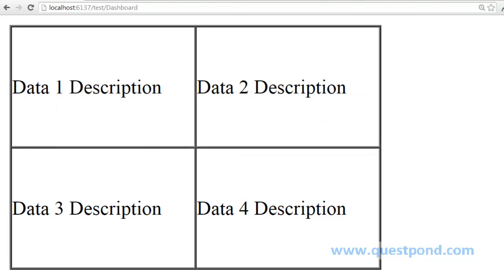Our sample application contains a UI — or in terms of MVC, a view — which is divided into four sections: section 1, section 2, section 3, and section 4. Each of these sections is displaying some kind of data. Now let's look at the code and understand where this data is coming from.